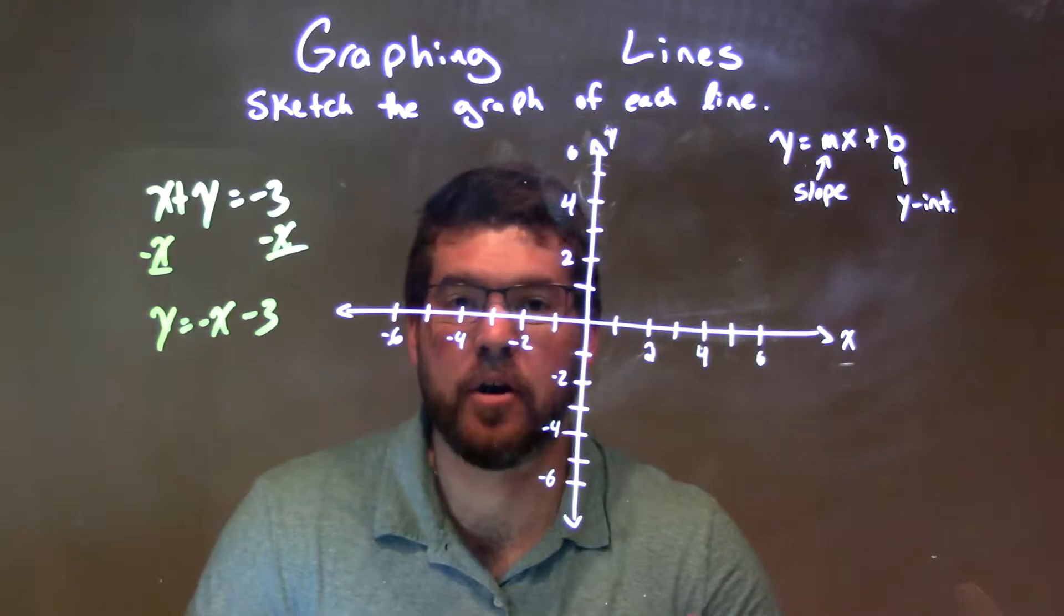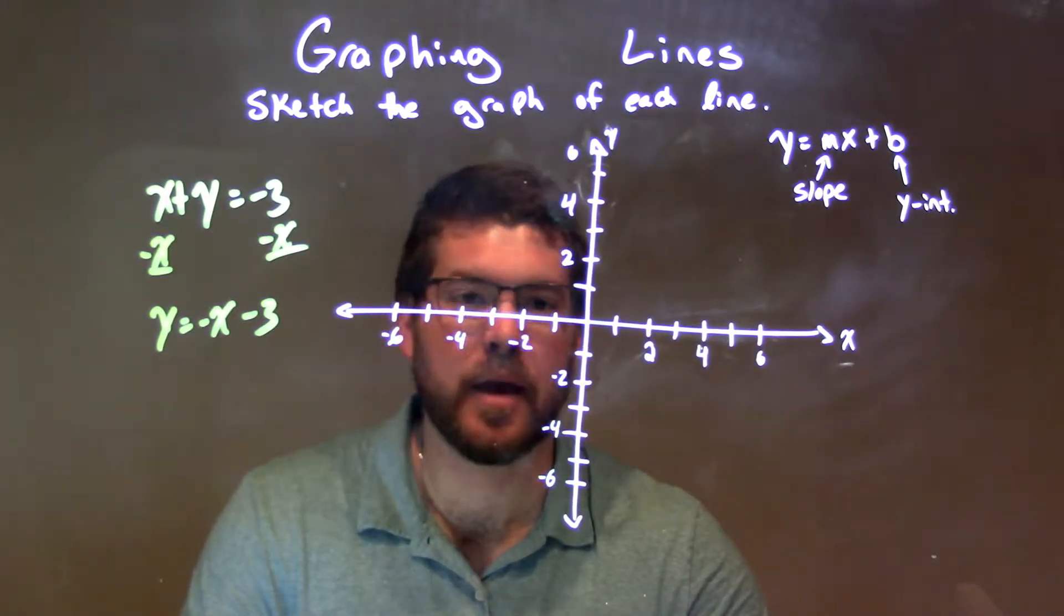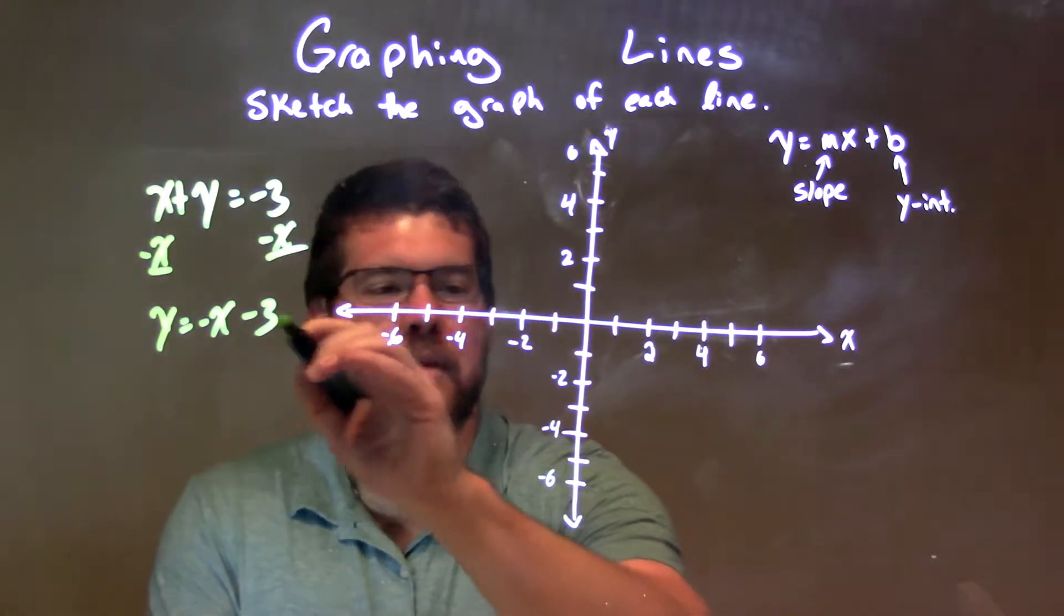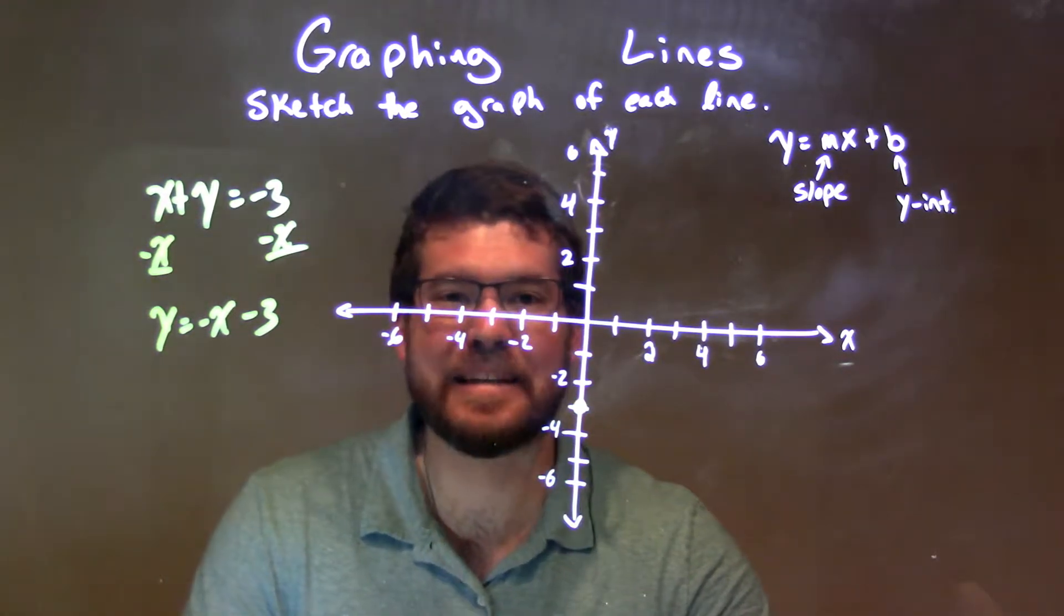Now we have it in slope-intercept form, which is much easier to graph from. Our y-intercept is negative 3. So we've got 1, 2, 3, negative 3 right there, and our slope is negative 1.